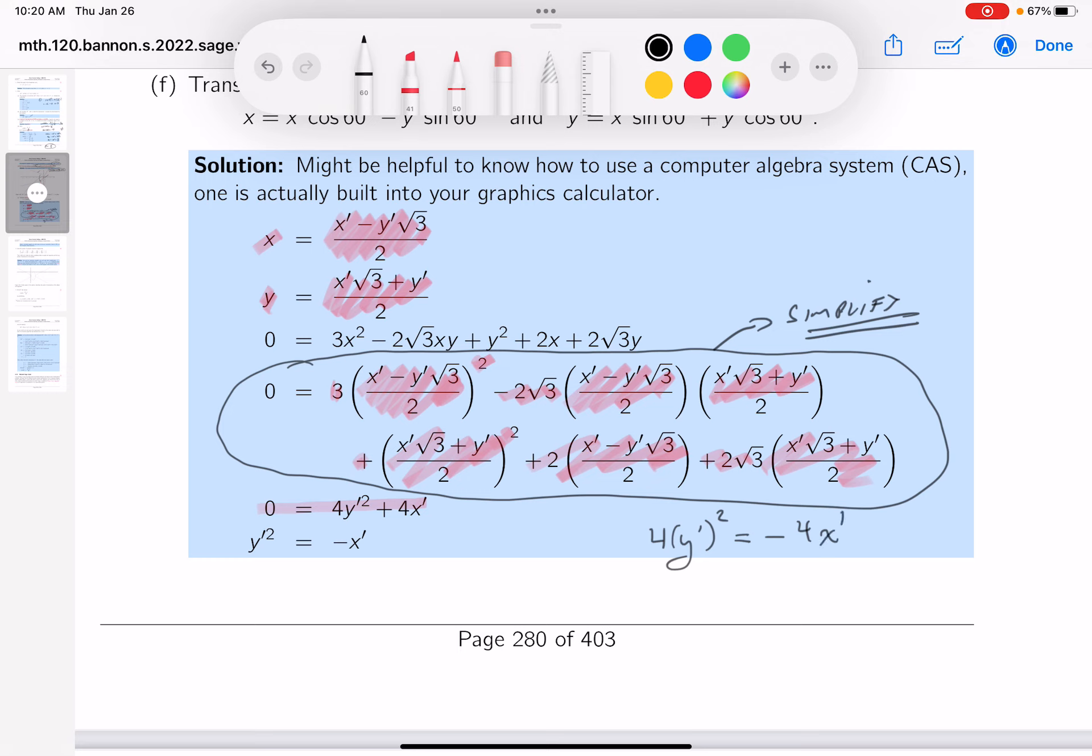4Y prime squared would equal minus 4X prime. Well, I'm going to divide both sides by minus 4. And you would get minus Y prime squared would equal X. Now, what does that look like? It's a parabola. I know that. What kind of parabola?